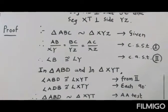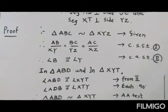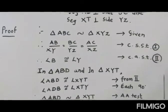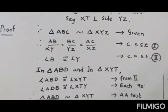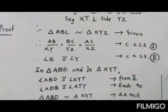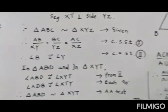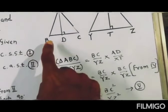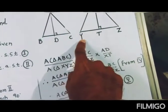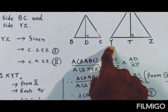If triangles are similar, their angles are congruent. So here, angle B is congruent to angle Y. In the diagram I can show that angle B is congruent to angle Y.